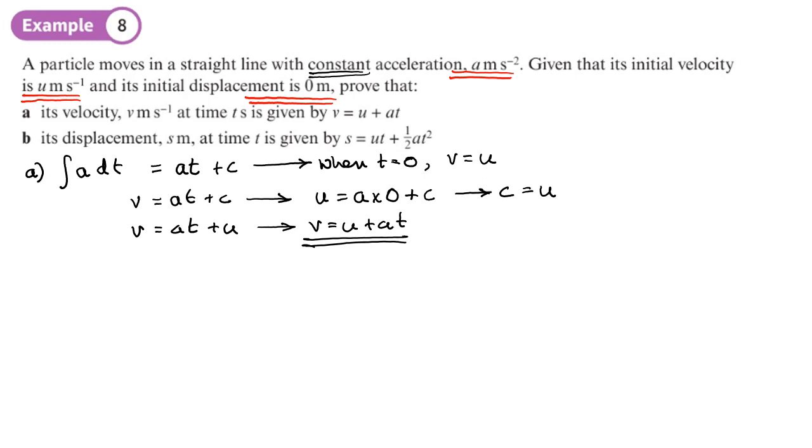Part b: its displacement s at time t is given by s equals ut plus half at squared. So we're going to take our previous answer. We know that when we integrate the velocity, we're going to get the displacement.